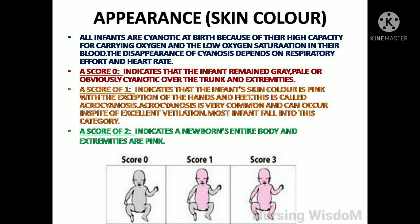A score of 0 indicates that the infant remains gray, pale, or obviously cyanotic over the trunk and extremities. A score of 1 indicates that the infant's skin color is pink with the exception of the hands and feet — this is called acrocyanosis, which is very common and can occur despite excellent ventilation. Most infants fall into this category. A score of 2 indicates that the newborn's entire body and extremities are pink.